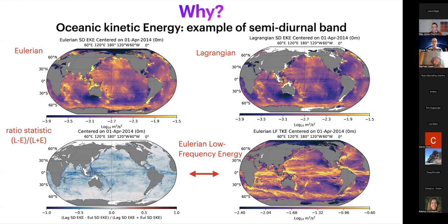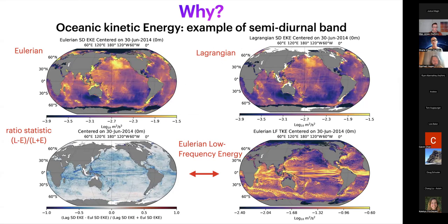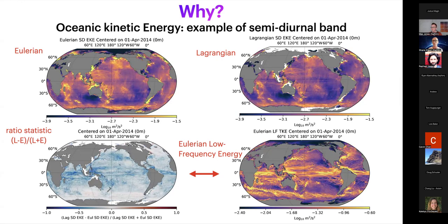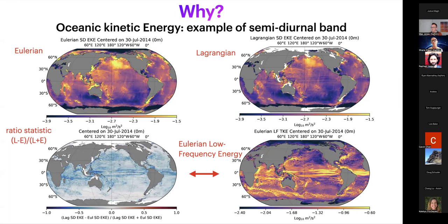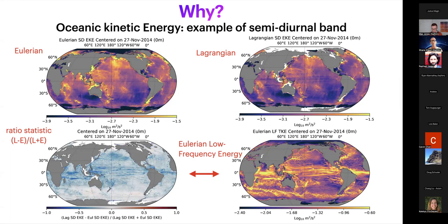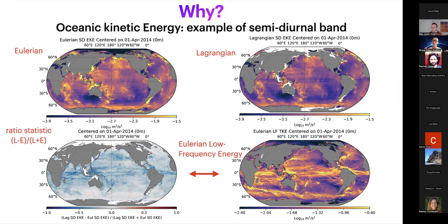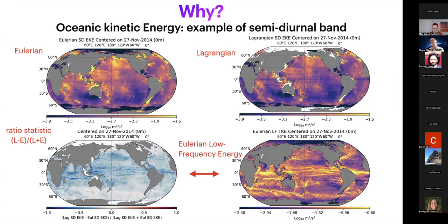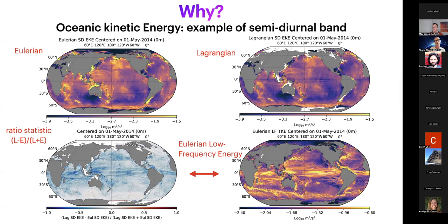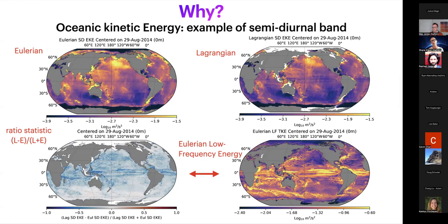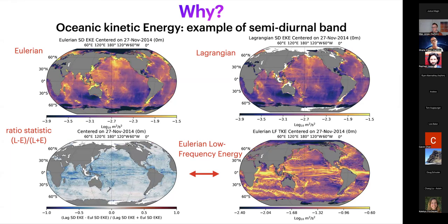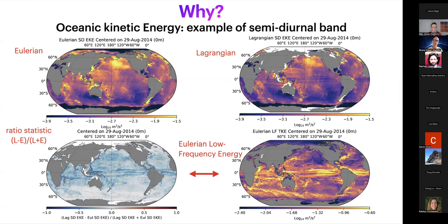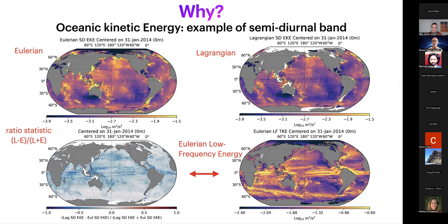An undergraduate student quantified the amount of kinetic energy in the tidal band. At the top left, you see the Eulerian estimate; at the top right, the Lagrangian estimate. At the bottom left, a map shows a ratio statistic of the two energy estimates. The abundance of blue on this map tells us that if you estimate the tide from drifters, you have potentially up to 30% underestimation. On the bottom right, you see the kinetic energy of the low-frequency component of the flow, and you can see how it is associated with the bias pattern on the left. We're writing a paper about this.